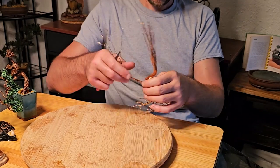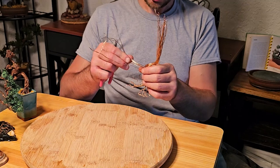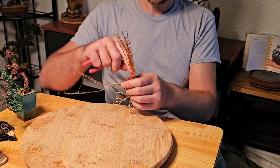We'll wind that the same way we did the first primary branch, and this is a good start for a nice wire bonsai.